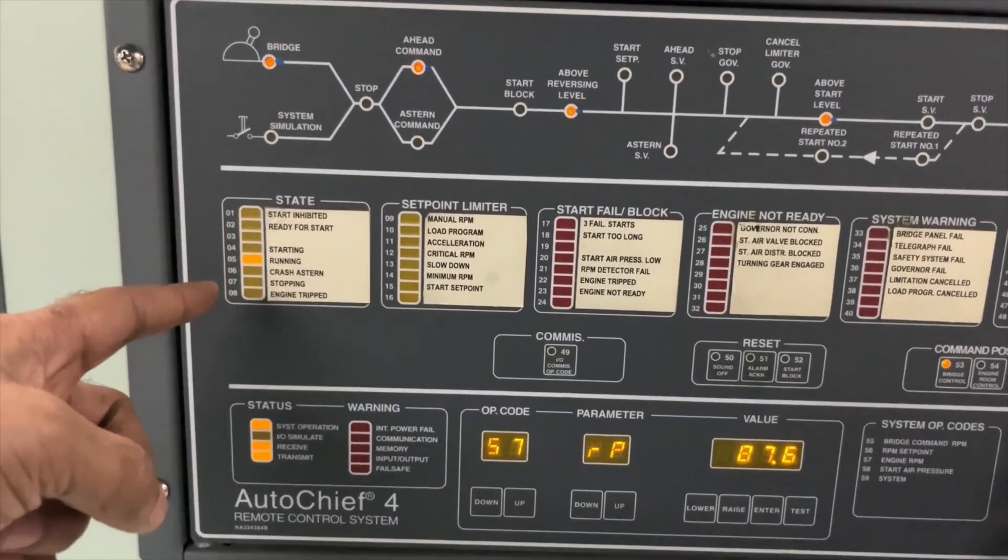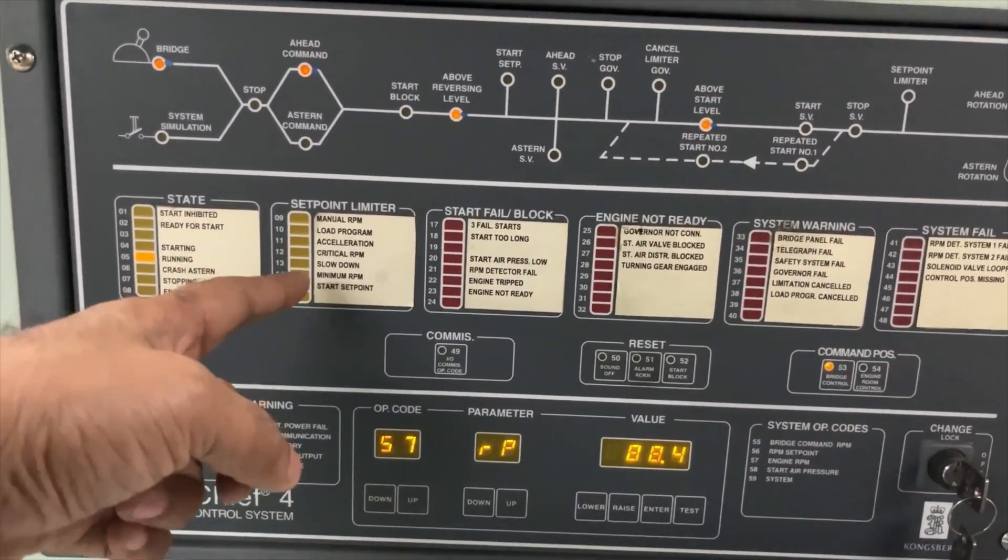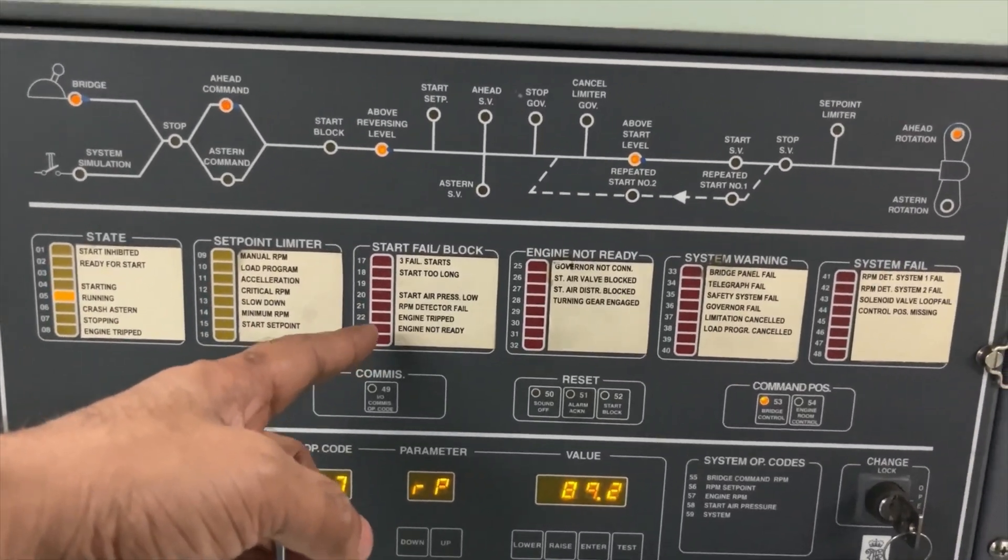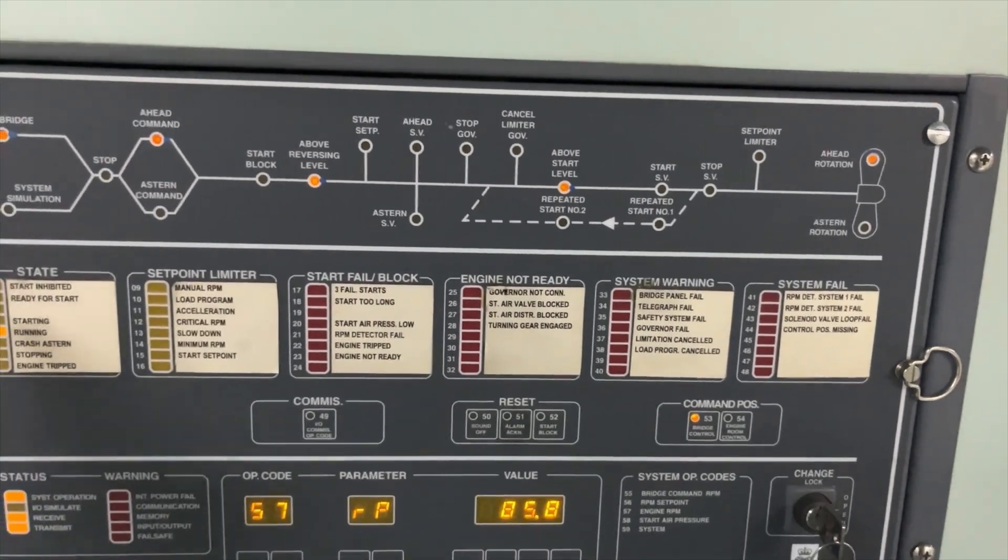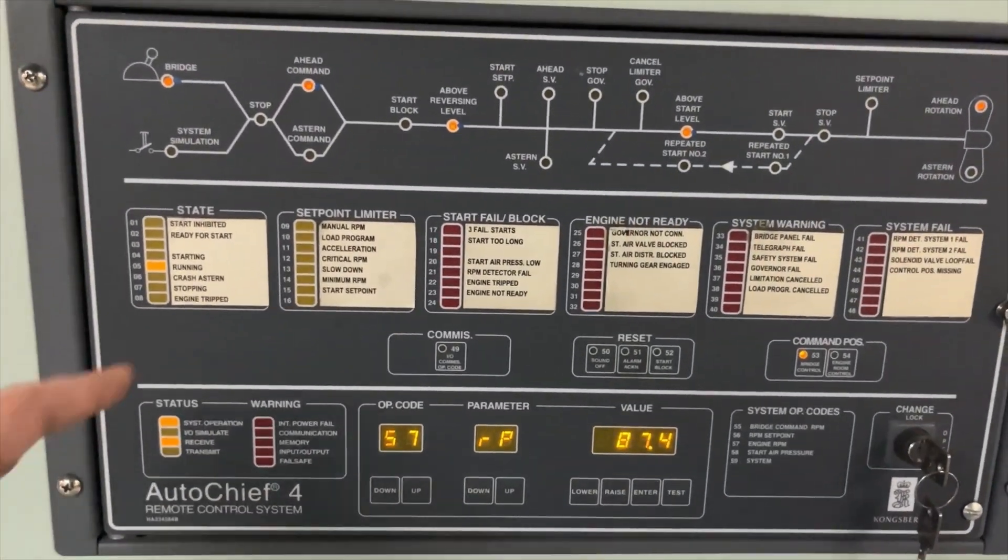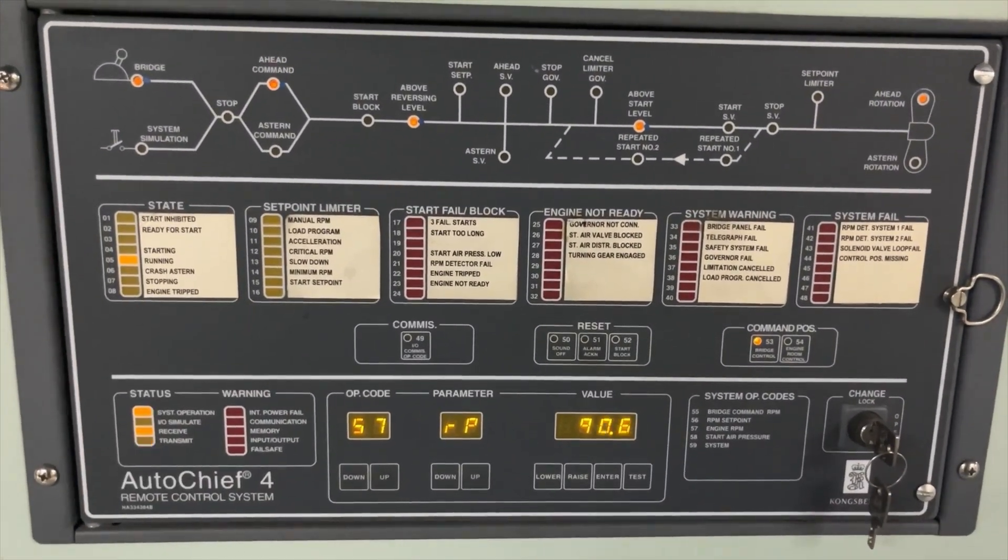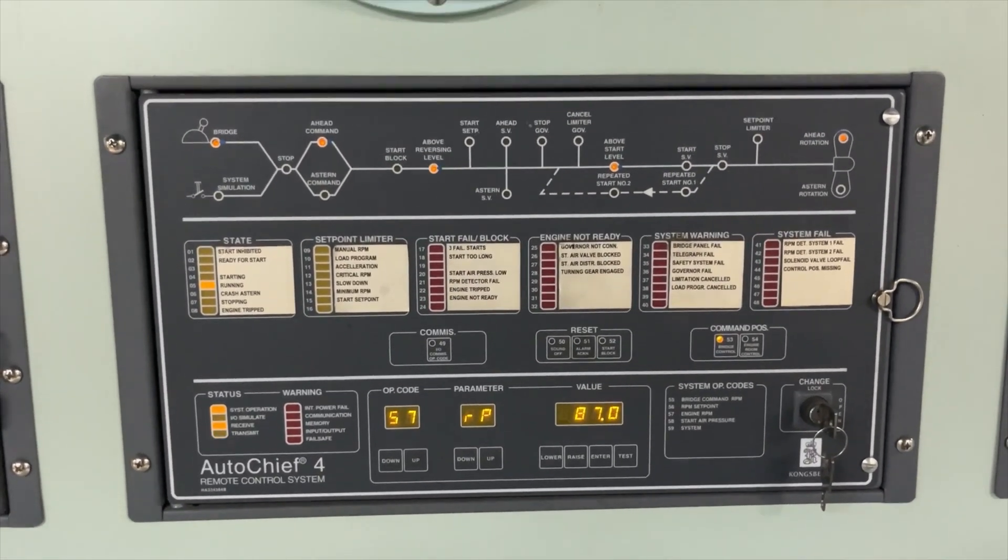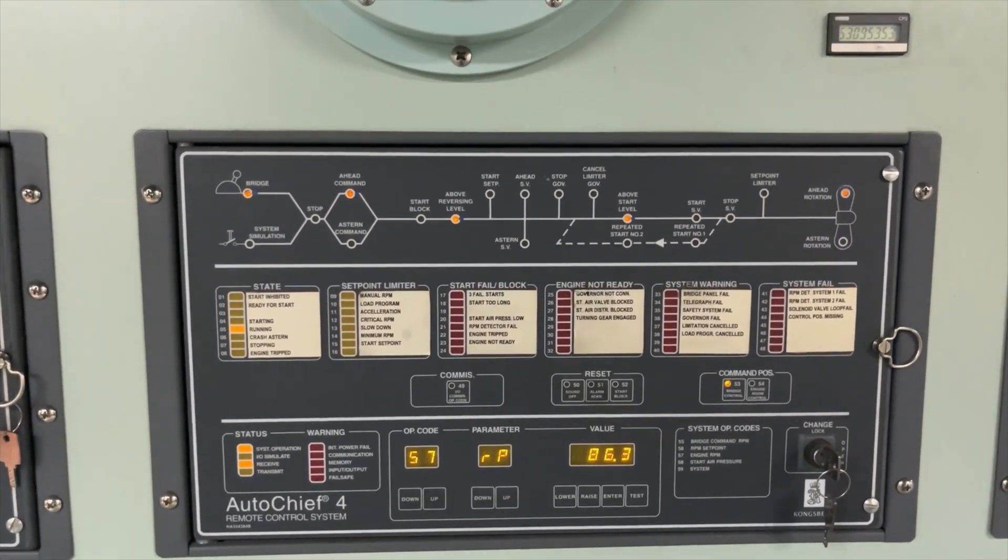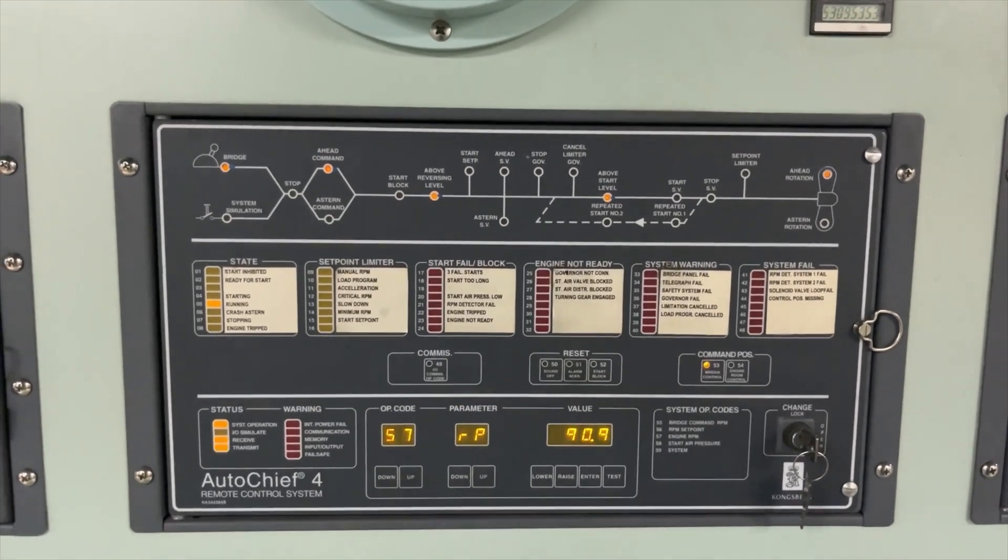If we give the indication right now it is running set point limiter, start fail block, engine not starting, system warning system fail. Whatever if there is no communication or any block is there in the engine, this unit is going to help you and give you the alarm so that you can rectify the problem if you face any problem.